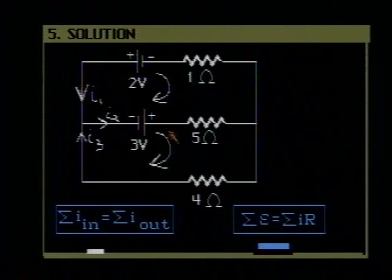We move down to the next loop to get another equation. For the sum of the EMF's, I have only 1 EMF in this loop. I go through it from the negative to the positive terminal. And therefore it's going to be positive. So I'm going to write plus 3.